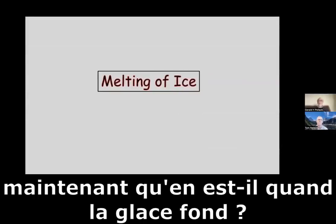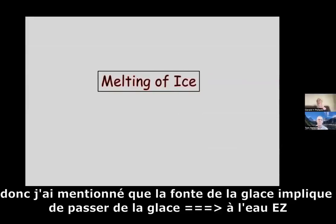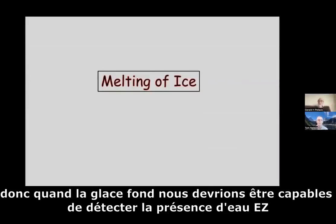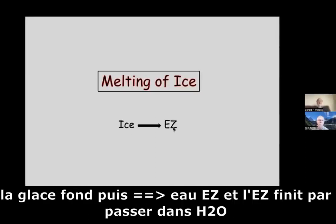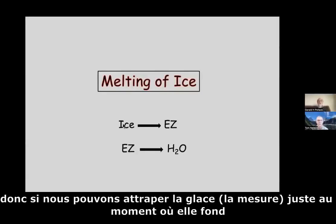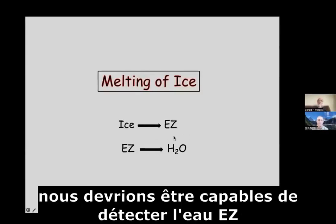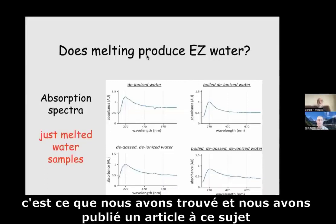What about the melting of ice? The melting of ice involves passing through EZ — you go from ice to EZ water. So when ice melts, we ought to be able to detect the presence of EZ water. The ice melts, goes into EZ, and the EZ eventually goes into H₂O. If we can catch the ice just as it's melting, we ought to be able to detect EZ water. That's what we found, and we published a paper on it.